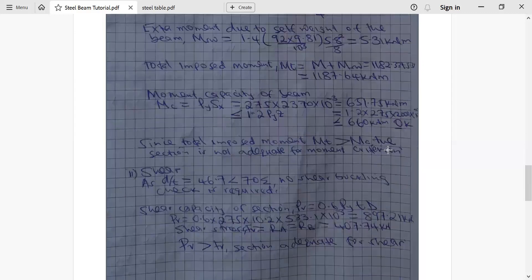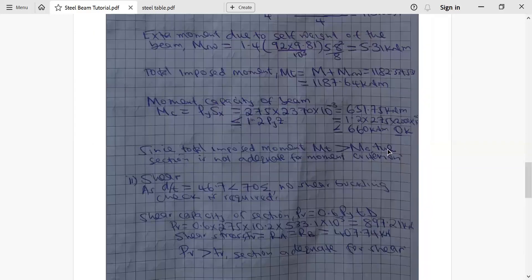Let's move to shear. Now in shear we say like the condition number one, we look at the ratio small d over small t and compare it with 70 epsilon naught. In this case you find it is 46.7, which is below 70. We don't need to consider shear buckling.